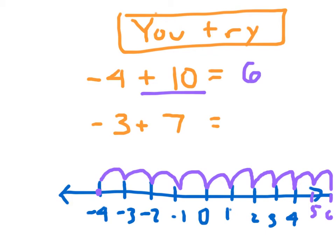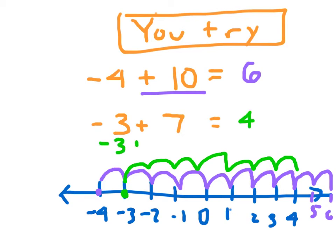For that second problem, negative 3 plus 7: here's negative 3, count up 1, 2, 3, 4, 5, 6, 7 away. Negative 3 plus 7 is 4. Using our other approach: negative 3 plus 3 plus 4 — that's 7 broken down into 3 plus 4. Negative 3 plus 3 cancels each other out. We have 4 using those inverses.